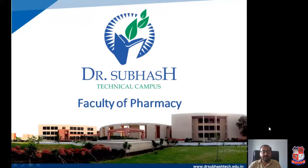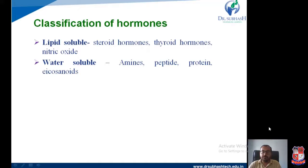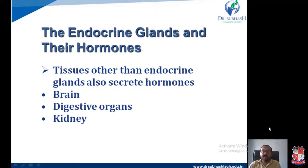Hello everyone. This is the second video for the endocrine system. During the last session we covered a brief introduction, regulation, and control of the endocrine system. Today we will start with the classification of hormones. There are basically two types of hormones: lipid-soluble and water-soluble. Lipid-soluble hormones include steroid hormones, thyroid hormones (T3, T4), calcitonin, and nitric oxide. Water-soluble hormones include amines, peptides, proteins, and eicosanoids.